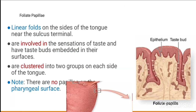Foliate papillae are linear folds on the sides of the tongue near the sulcus terminalis. They are involved in the sensation of taste and have taste buds embedded in their surfaces. They are clustered into groups. There are no papillae on the pharyngeal part of the tongue.